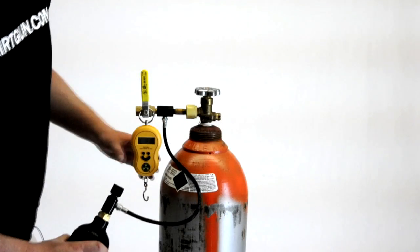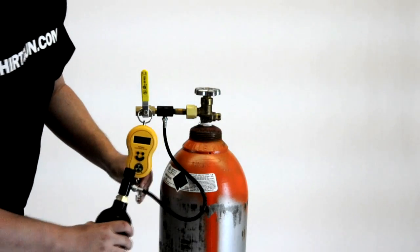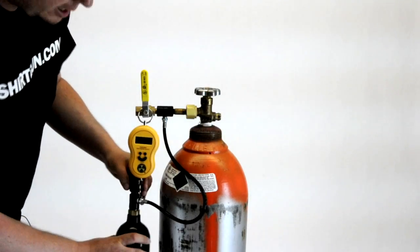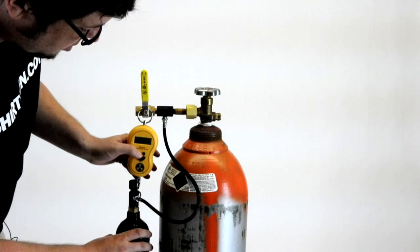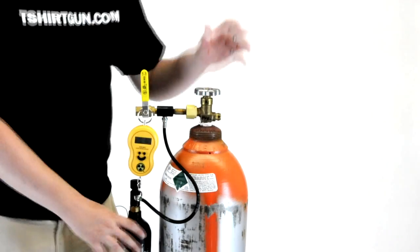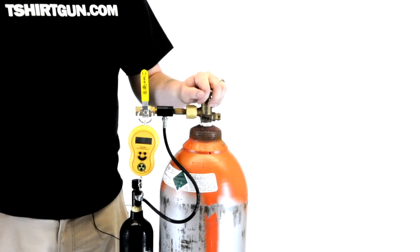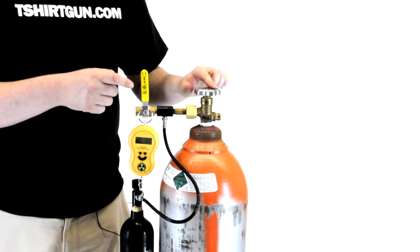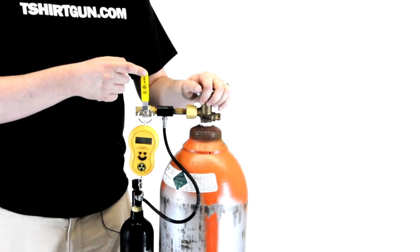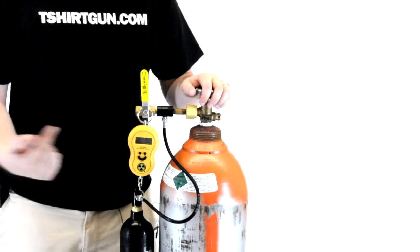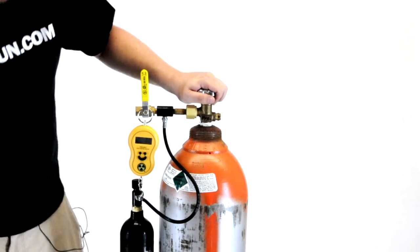Now that our tank is purged, we're going to make sure our scale is in position and on. We're going to hang our tank on the scale and zero the scale out. We're going to fill the tank by opening the main valve. Once again, anytime this main valve is open, we make sure this exhaust valve is in the off position. We're going to be filling the tank with 18 to 20 ounces of CO2.